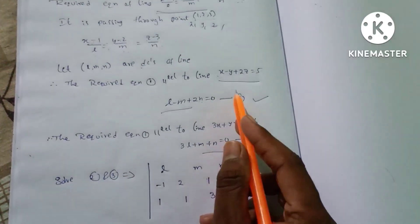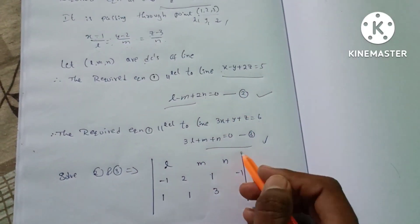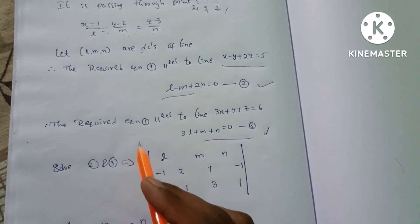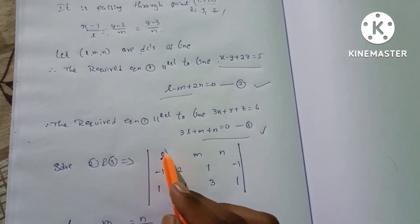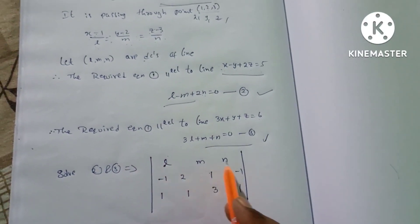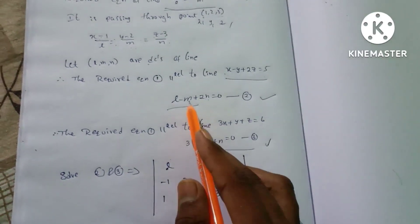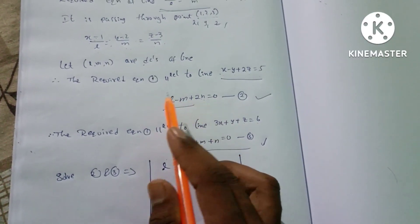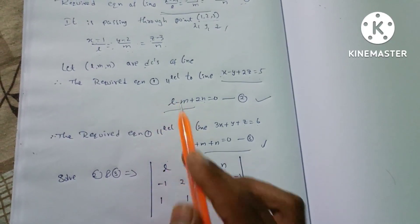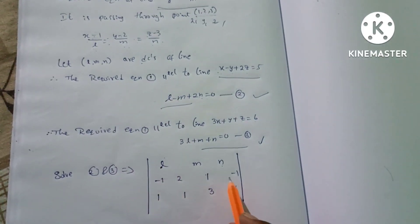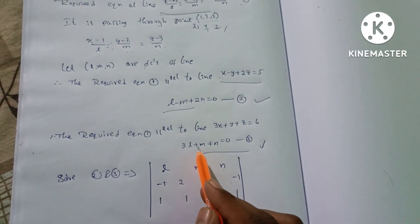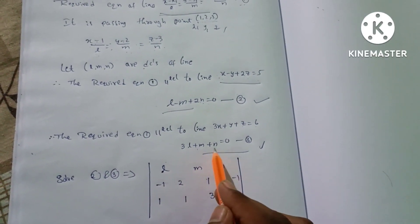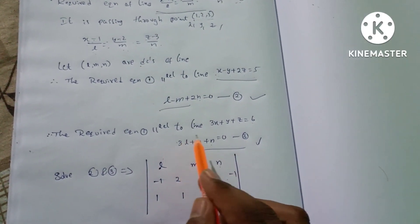Now applying equations 2 and 3 using cross-multiplication. The determinant values are: for the first row, -1, 2, 1, -1; and for the second row, 1, 1, 3, 1. These are the coefficients used to solve for L, M, N.